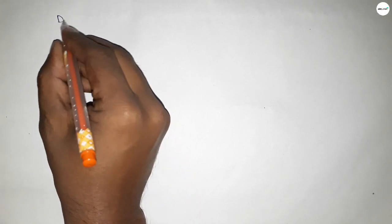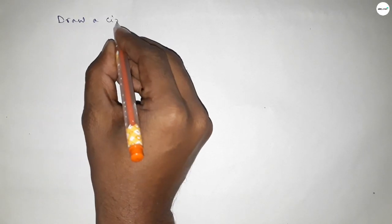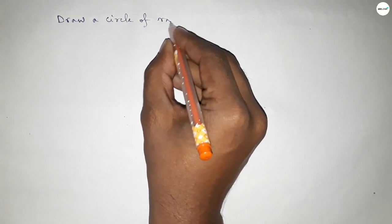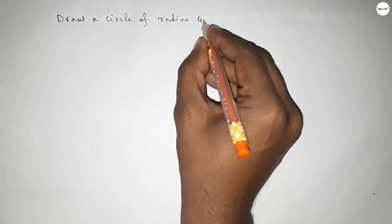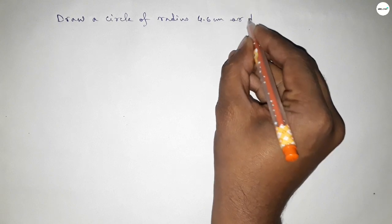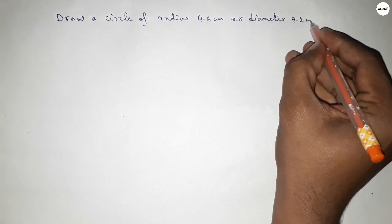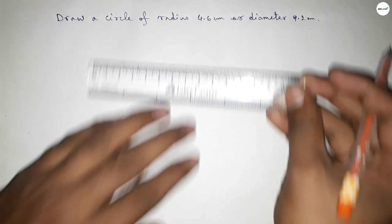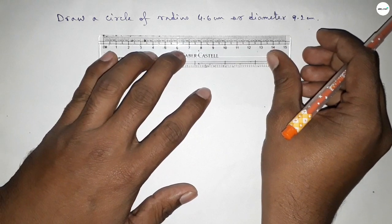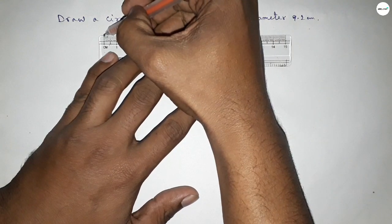Hi everyone, welcome to SI Share Classes. Today in this video we have to draw a circle of radius 4.6 centimeter or diameter 9.2 centimeter. So let's start the video. First of all, drawing here the radius 4.6 centimeter.